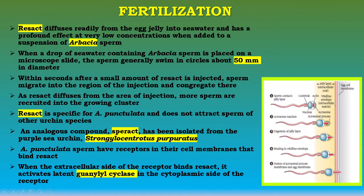As resact diffuses from the area of injection, more sperm are recruited into the growing cluster. Resact is specific for Arbacia punctulata and does not attract sperm of other sea urchin species. An analogous compound, speract, has been isolated from the purple sea urchin Strongylocentrotus purpuratus.